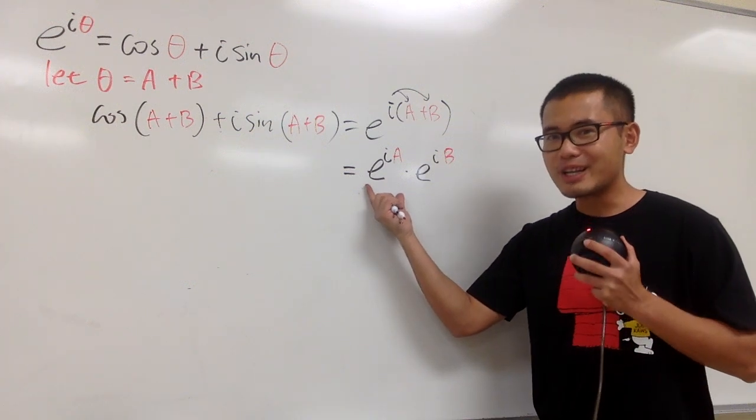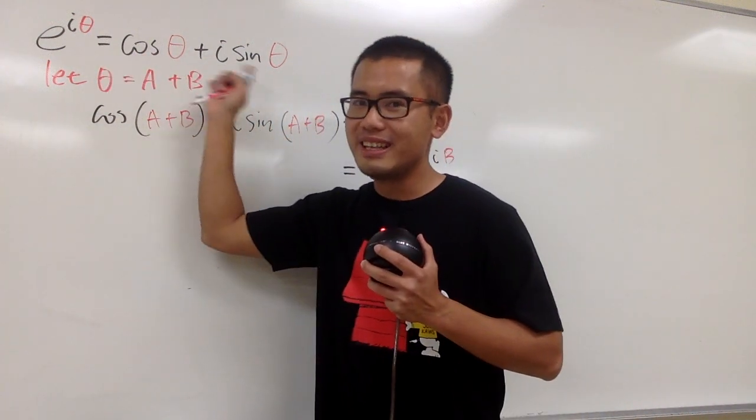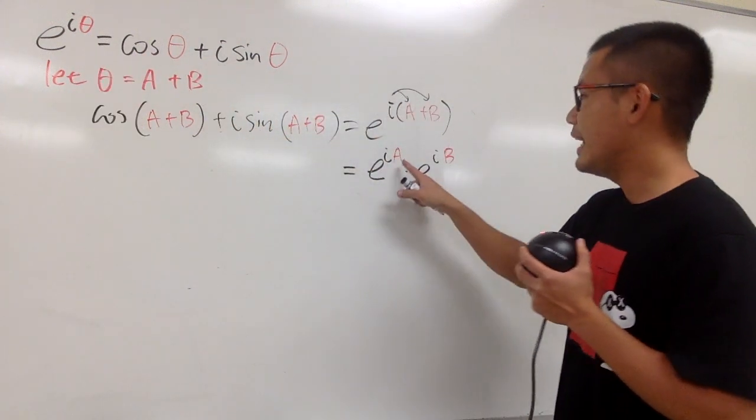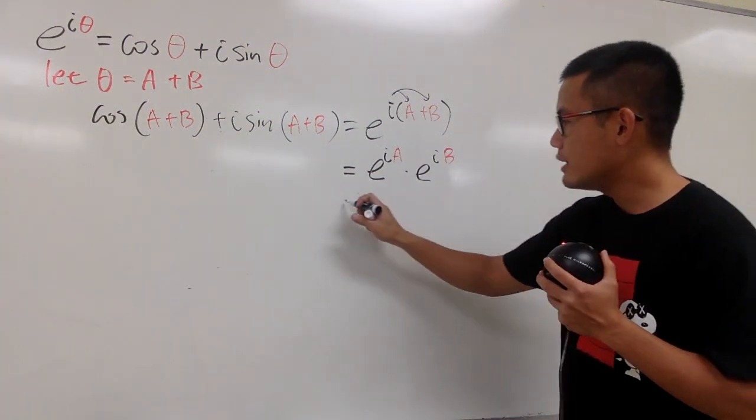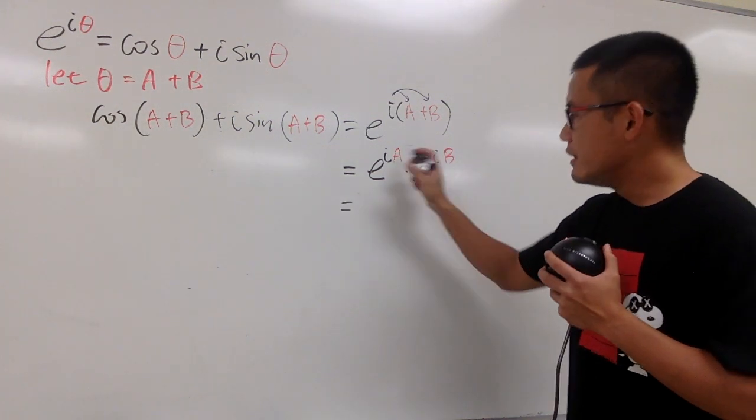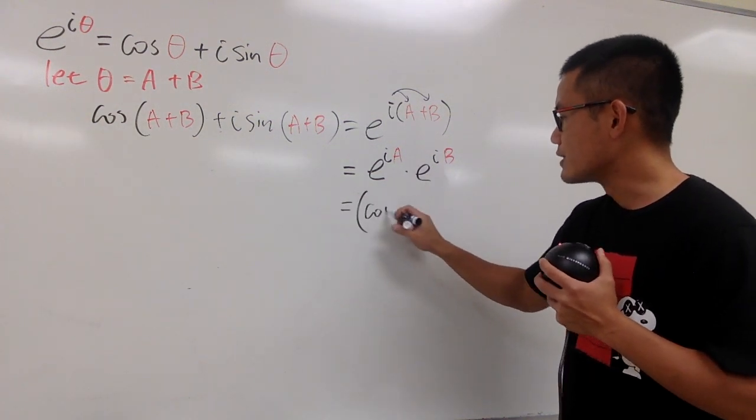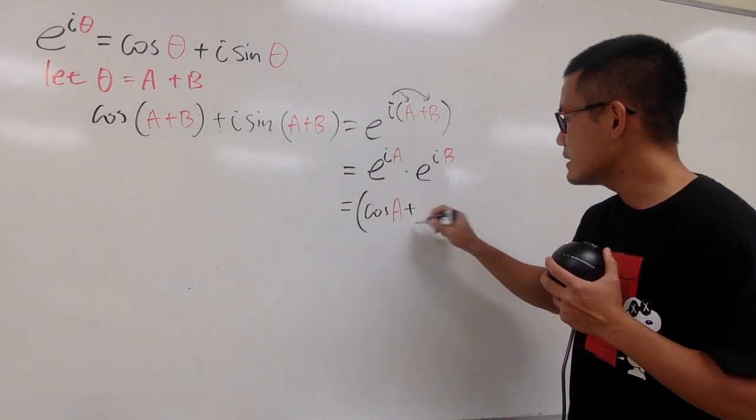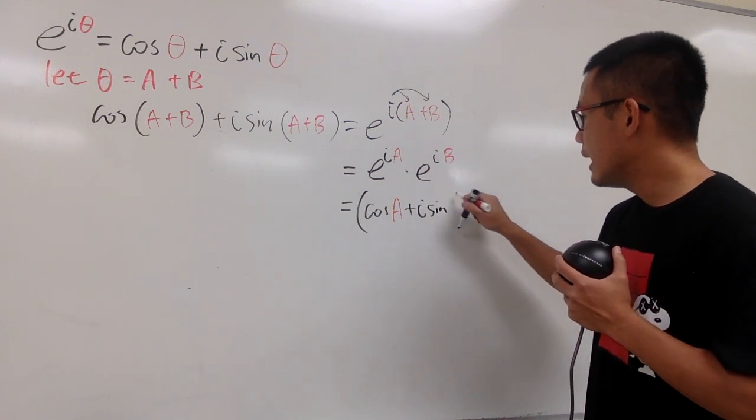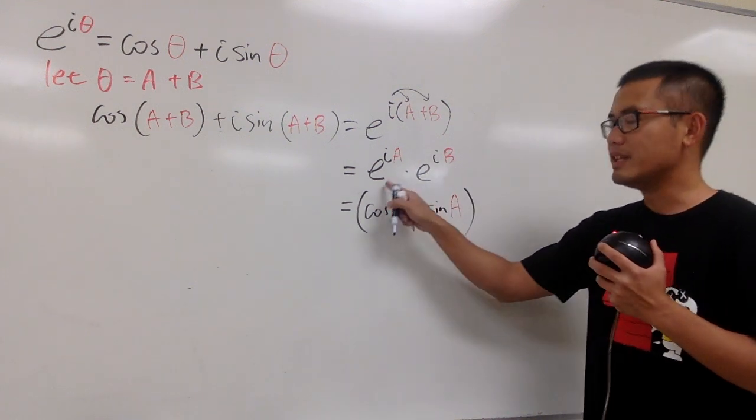Well, for this part, I can go ahead and utilize this formula again, where the angle is just the a, so let me write this down right here. This is going to be, parentheses, cosine a plus i sine a, isn't it? For this part.